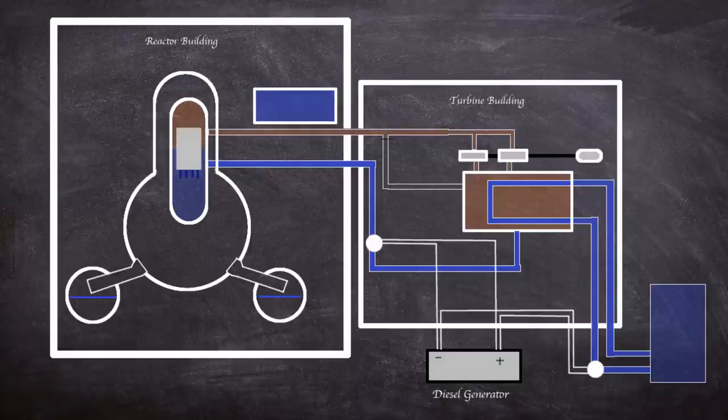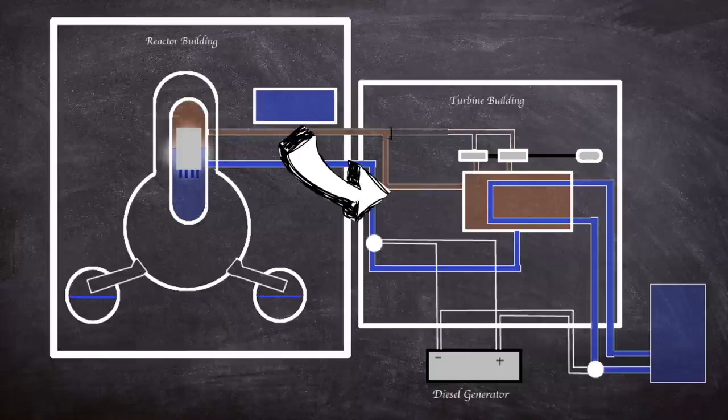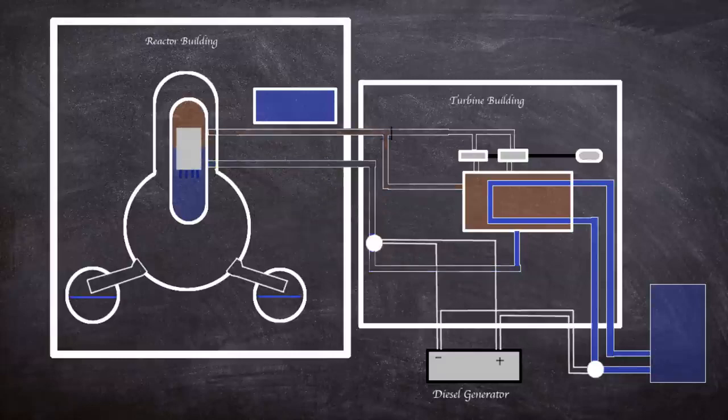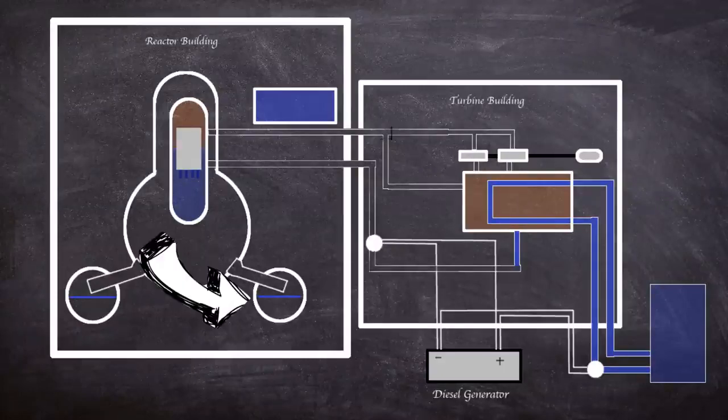To help with cooling, in normal shutdown the turbines are bypassed and coolant steam goes straight to condensers, then is pumped back to the core. However, during this event, the reactor was completely isolated from the turbine building due to power loss. With the usual cooling isolated, a backup system using the suppression pool was used.